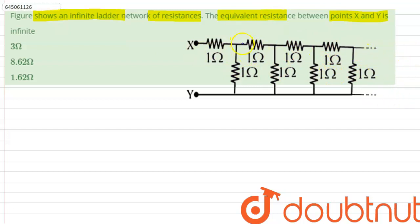As this ladder is infinite, therefore if we assume x to be at this point and y to be at this point, it is still an infinite ladder. Therefore, the equivalent resistance of this system and of this system will be equal.